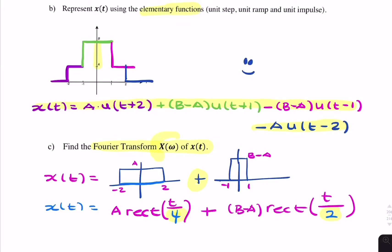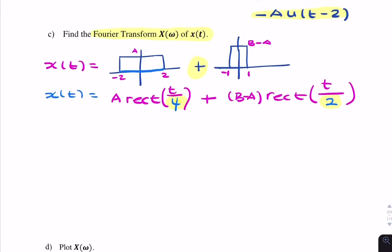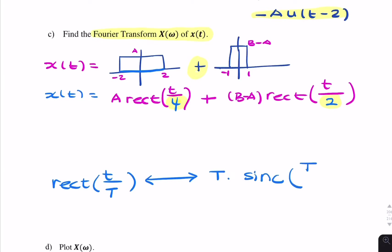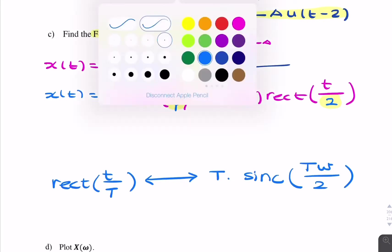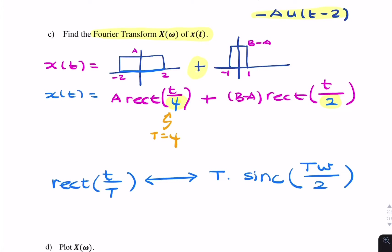Now the question asks for the signal in the frequency domain — find X(ω). We make use of a Fourier transform pair: a rect function with period T has a Fourier transform of T times sinc(Tω/2). In this case, T equals 4 for the first rect function, and T equals 2 for the second.